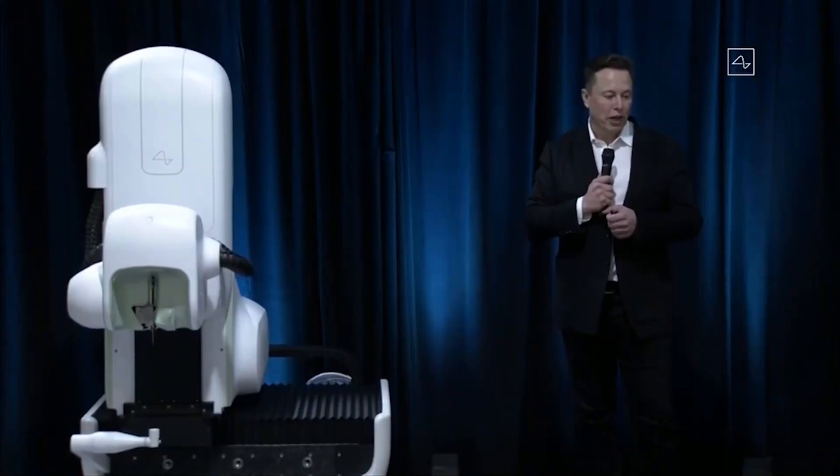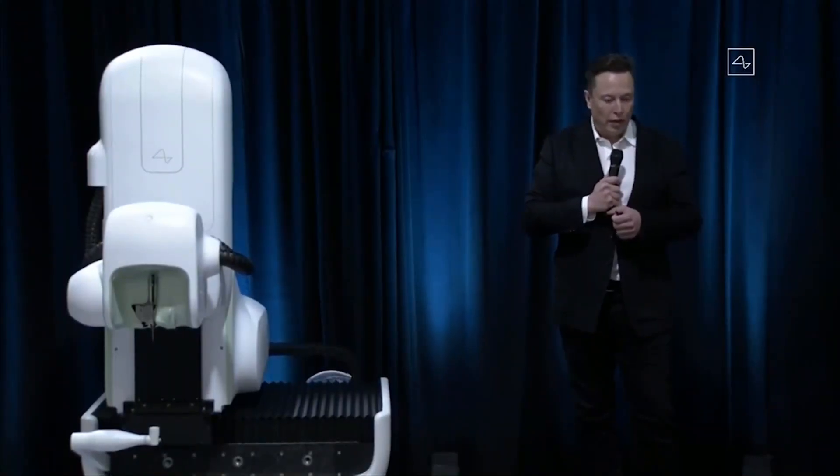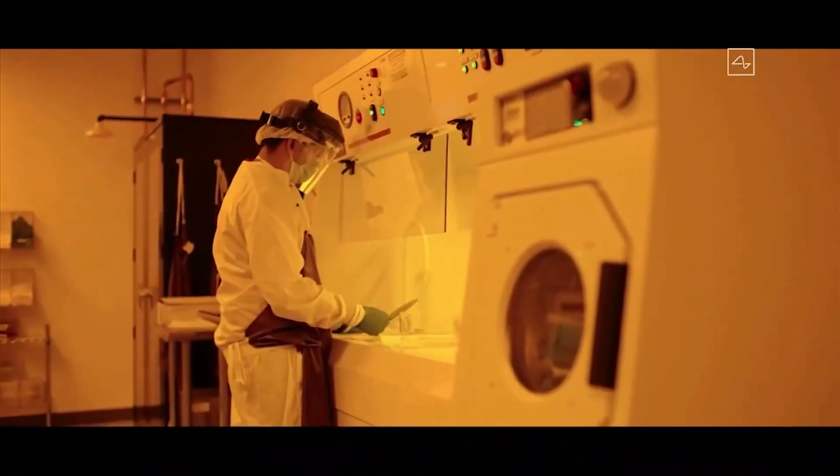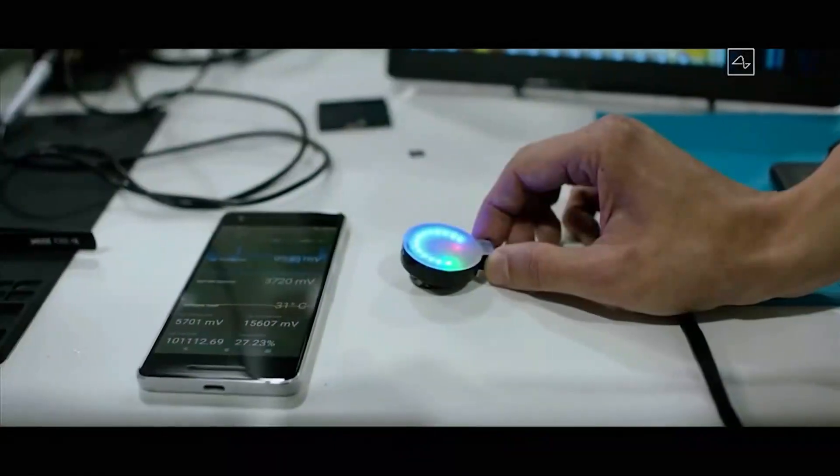Musk has made a lot of outrageous statements about the potential benefits of Neuralink. He predicted that by 2030, humans would be able to store and replay memories, as shown in the TV show Black Mirror. Experts have questioned these claims time and again.